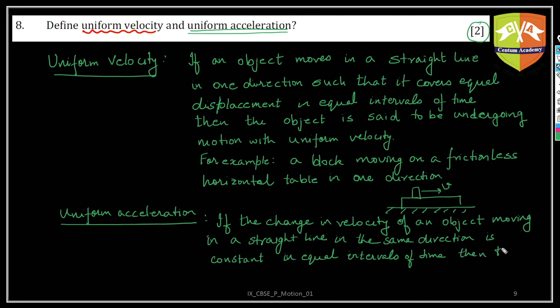Then the body is said to be undergoing, undergoing a motion with uniform acceleration. I hope you understood. And what will be example? So, I'm just writing example in short. For example, freely falling body is undergoing uniform acceleration, and that is acceleration due to gravity.